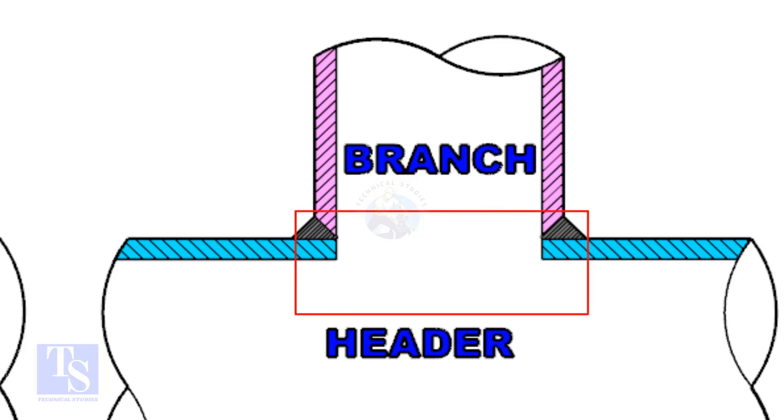And on the header pipe, a hole is there. The diameter of the hole on the header pipe is the same as the inside diameter of the branch pipe.